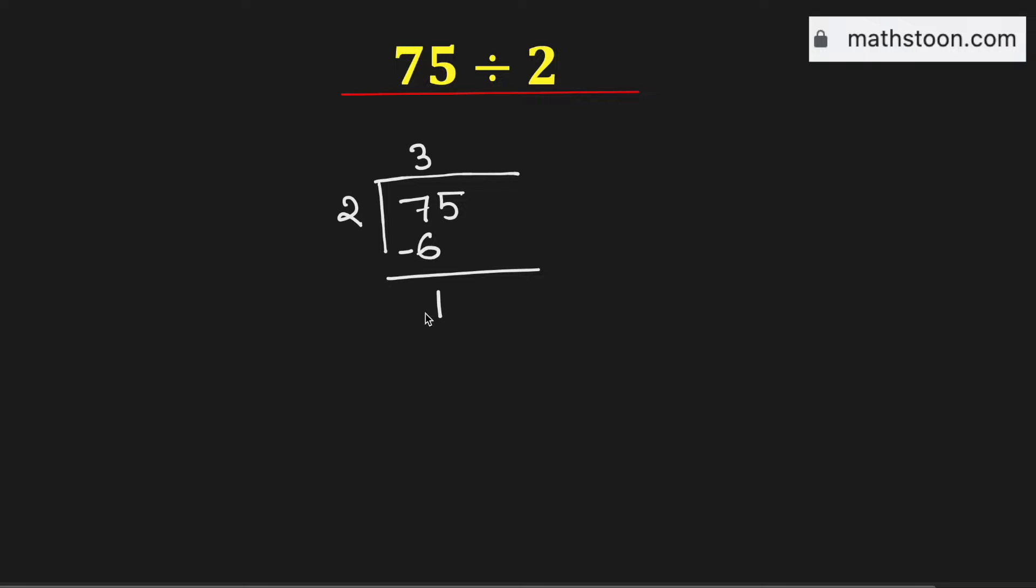We know that 2 cannot go into 1. So we need to bring this 5 here. Now we know that 7 times 2 is equal to 14. Now we subtract this and we get 1 here.